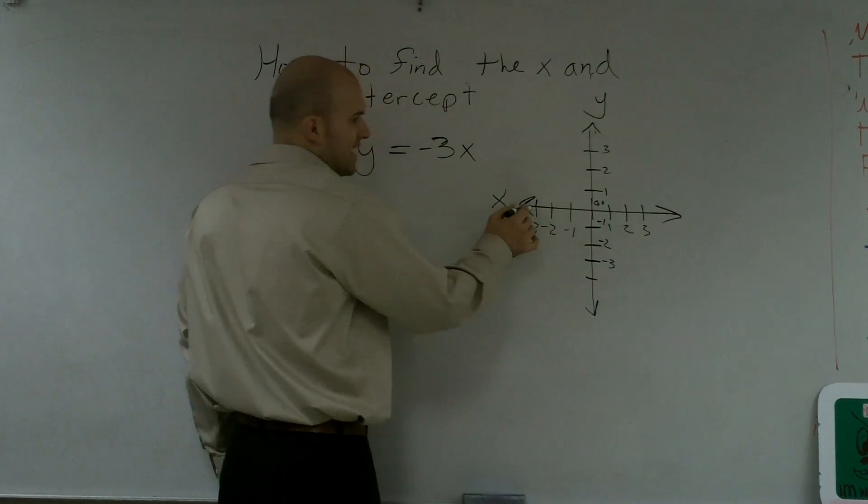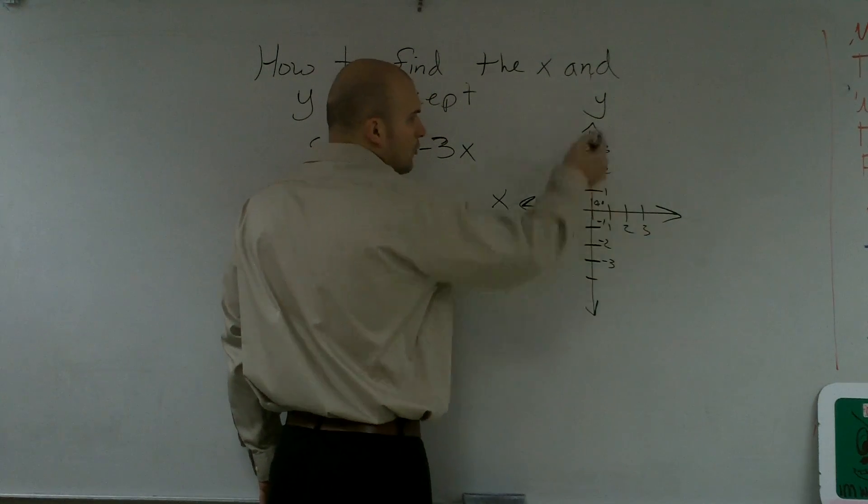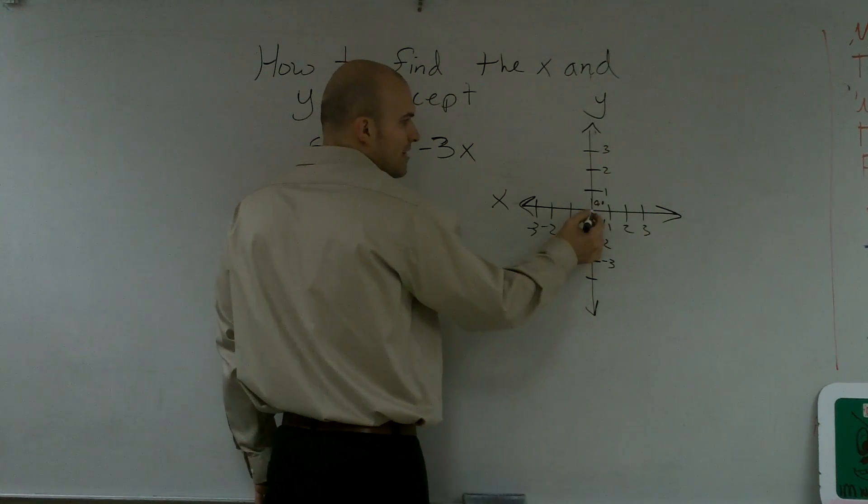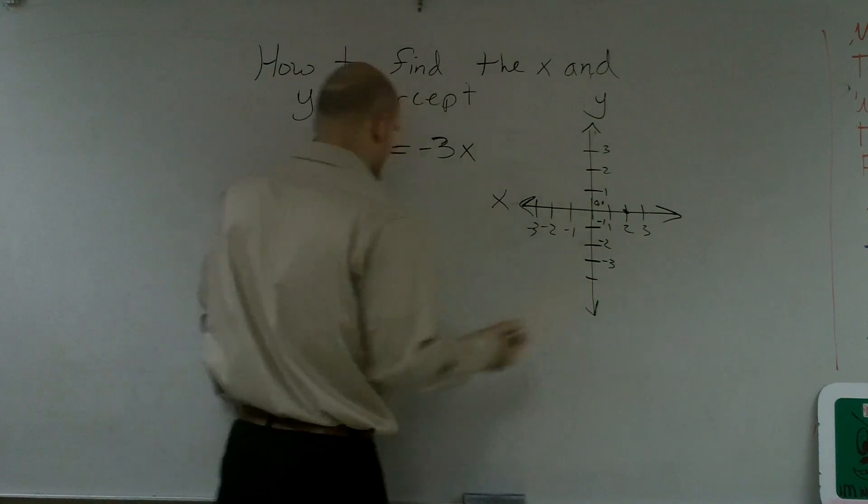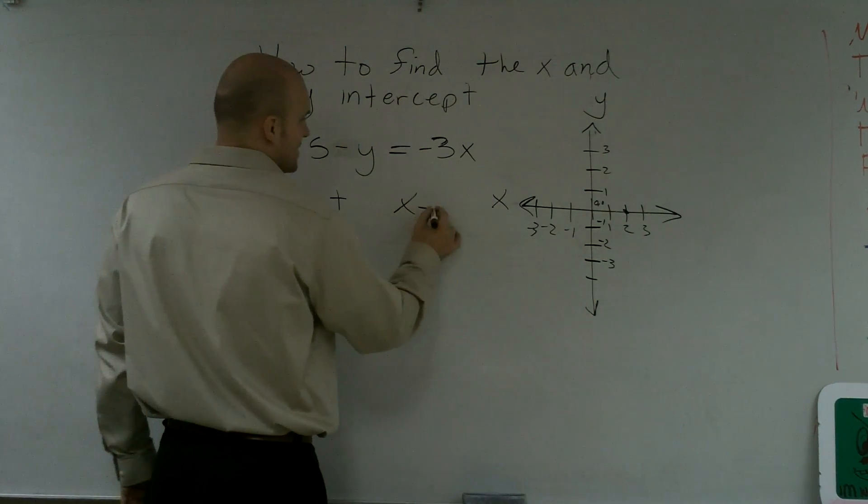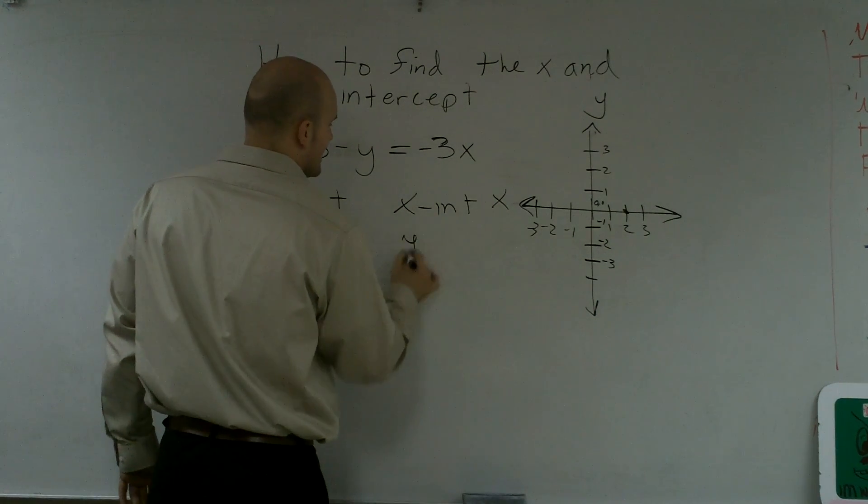And now, when I want to find the x intercept, where does it, on this line, what is my y value? And my y value, again, is zero. Because if I have a point on this line, it does not go up or down. Now, so the x intercept, y equals zero.